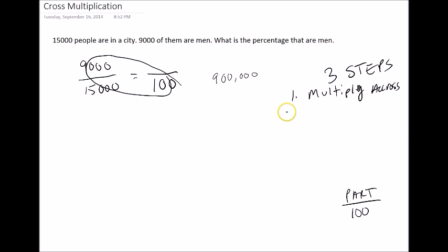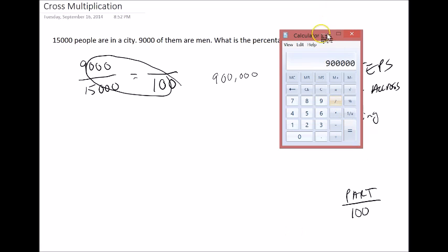Next, we divide by the remaining number. So we have that number we got before divided by this number right here, 15,000. And we get 60.